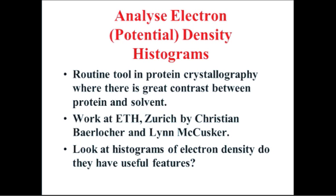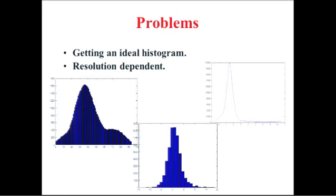There's been work at ETH by Christian Berlacher and Lynn McCuskus who've done this. Density histograms — for those who haven't met them — they're just the same thing you get in your digital camera when you bring up information about your photograph. It tells you about the intensity of your pixels and how many pixels there are with that intensity. It's just a histogram of intensities. And that's one for an idealized zeolite — so you can actually generate histograms from ideal structures.